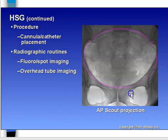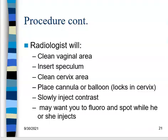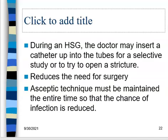Here's what a scout projection looks like — just a 10 by 12 bladder shot including the whole pelvic bowl. The radiologist will come in, clean everything, put the speculum in, clean the cervix, and then place a cannula or balloon — a little tube with a balloon — to form a seal at the cervix so contrast doesn't flow back out. Then the doctor slowly injects the contrast; he may want you to drive the fluoro tower during injection, and may insert a catheter into the tubes for individual study. Aseptic technique must be maintained throughout.